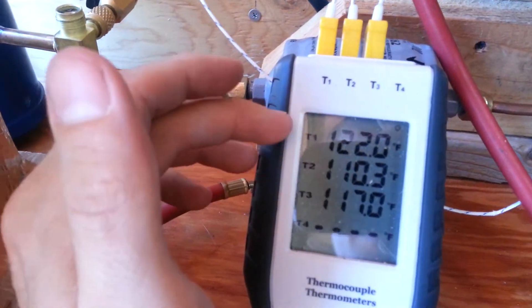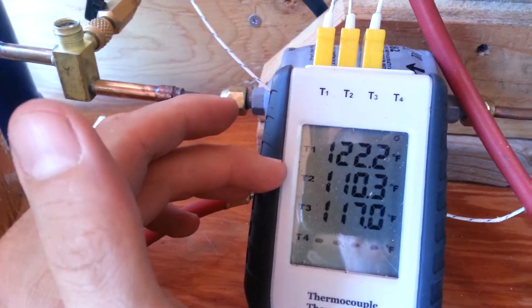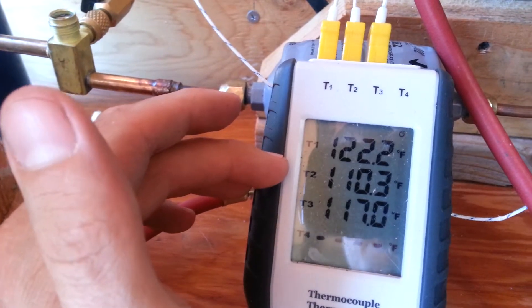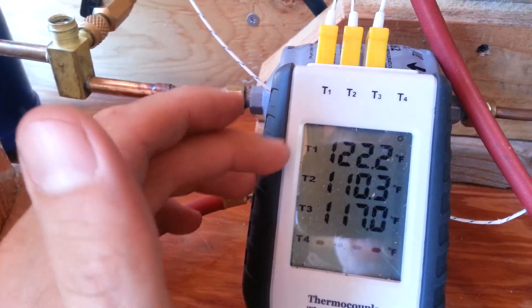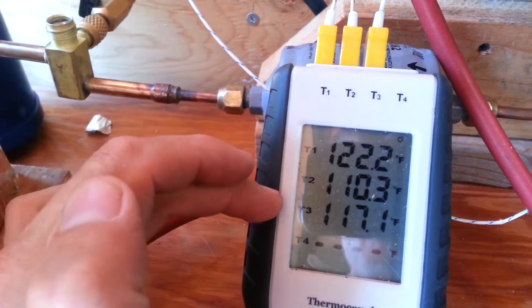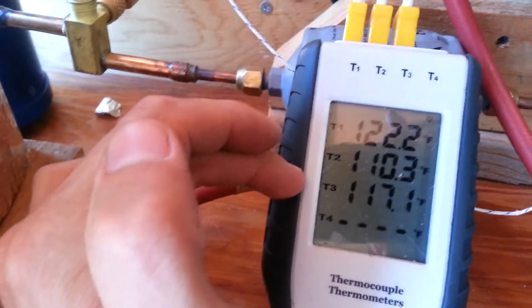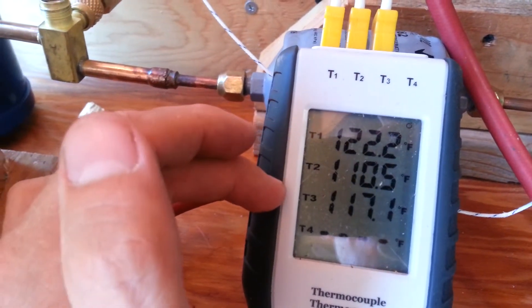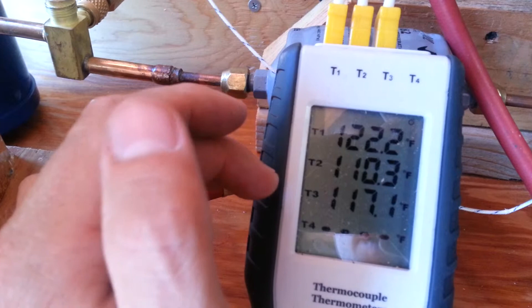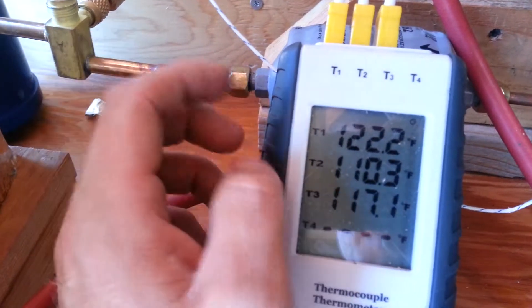The first value there is the discharge. The second value is after the condenser and the receiver, so those are two sensors there. The third one is actually up, and that's why I couldn't find it. That's the other sensor, the other thermocouple, the one that blew out this morning.